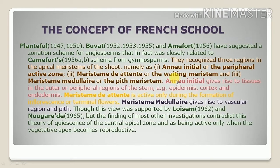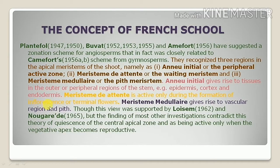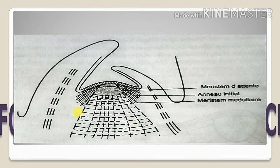The peripheral active zone gives rise to tissues in the outer or peripheral areas of the stem — epidermis, cortex, and endodermis. The waiting meristem is active only during the formation of the inflorescence or terminal flowering. The pith meristem gives rise to vascular areas and pith.